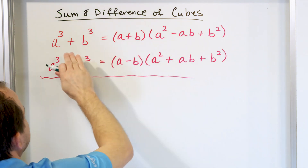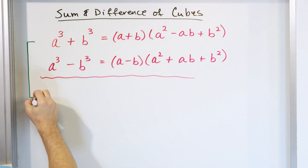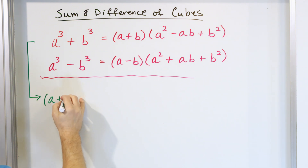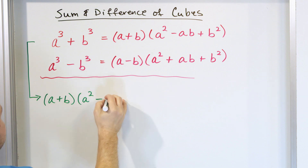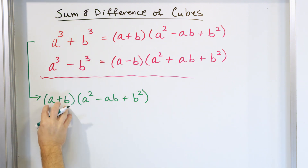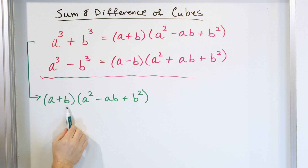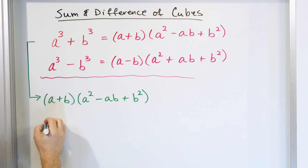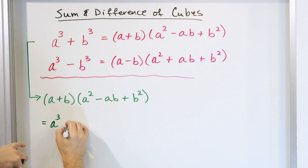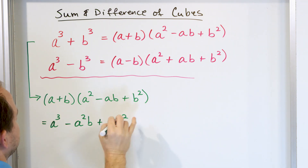Let's prove the first one. We're saying A cubed plus B cubed equals A plus B times A squared minus AB plus B squared. So let's take A plus B and multiply by A squared minus AB plus B squared. You have a binomial times a trinomial — take the first term A, distribute it into each of the three terms, giving A cubed, minus A squared B, and AB squared.